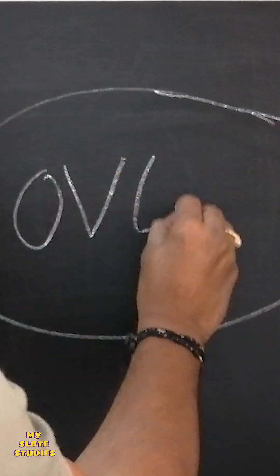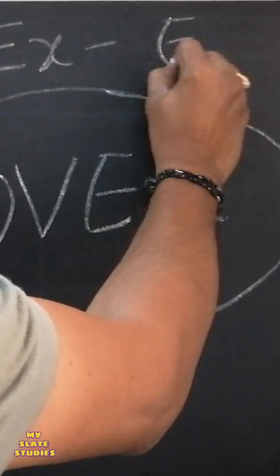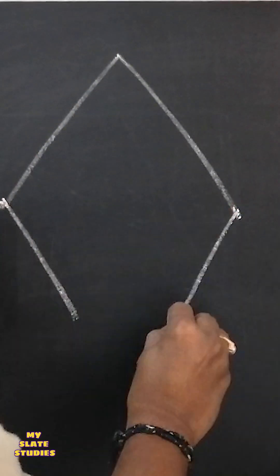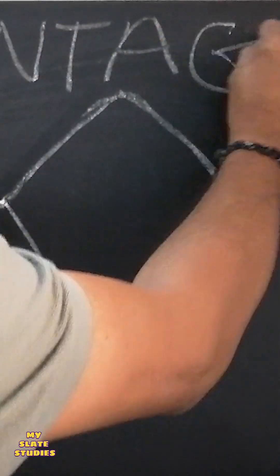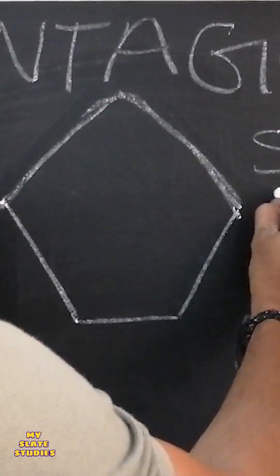Oval — a stretched circle, like an egg. Then the pentagon, a five-sided polygon with 108-degree angles.